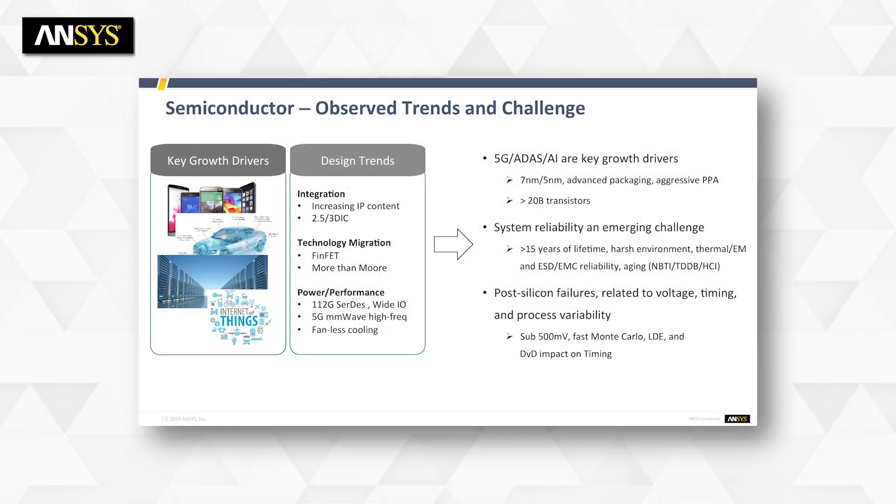For 7 nanometer design, we see a lot more failures, including layout-dependent effects that need to be addressed because transistors are so close to each other. Fast multi-corner simulation is needed to look at process variability and high-quantile sigma calculations. VDD is continuing to drop below 500 millivolts, giving a very slim margin in terms of design for reliability.